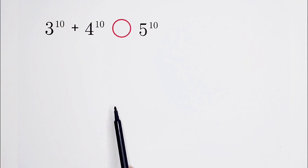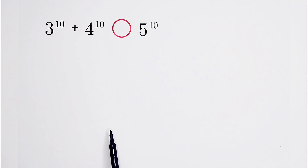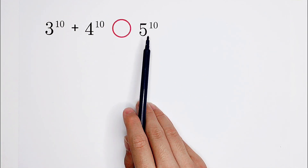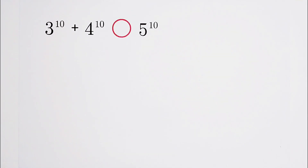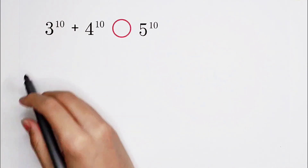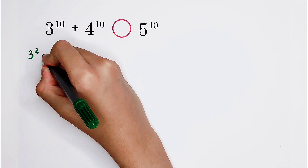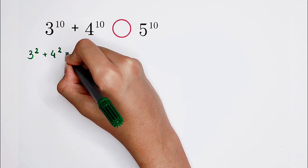This is a very, very good relationship among these three numbers. However, we have a new problem: the exponents are 10, not 2 — so a little bit large. We must find a solution, and we will find a solution. Let's start with 3 squared plus 4 squared is equal to 5 squared.